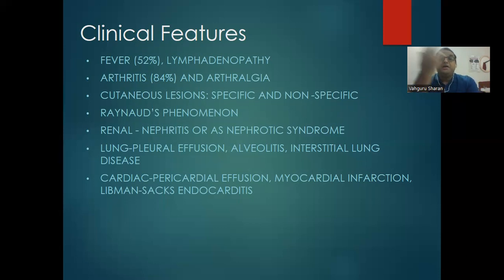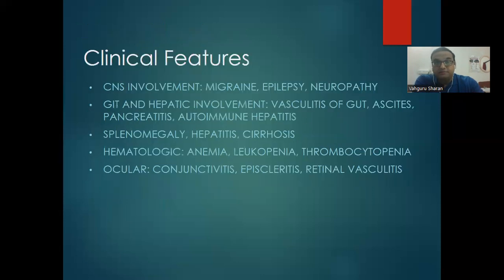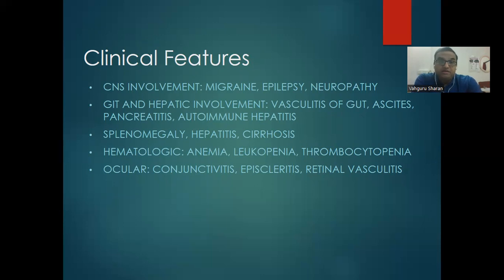Cardiac involvement includes pericarditis, pericardial effusion, myocardial infarction, and Libman-Sacks endocarditis. CNS involvement includes migraine, epilepsy, and neuropathy. GIT involvement includes vasculitis of gut, ascites, pancreatitis, autoimmune hepatitis, splenomegaly, and cirrhosis. Blood involvement causes pancytopenia — all cell lines are depressed: RBCs (anemia), WBCs (leukopenia), and platelets (thrombocytopenia). This leads to infections, bleeding, and pallor. Eyes may show conjunctivitis, episcleritis, and adrenal vasculitis.